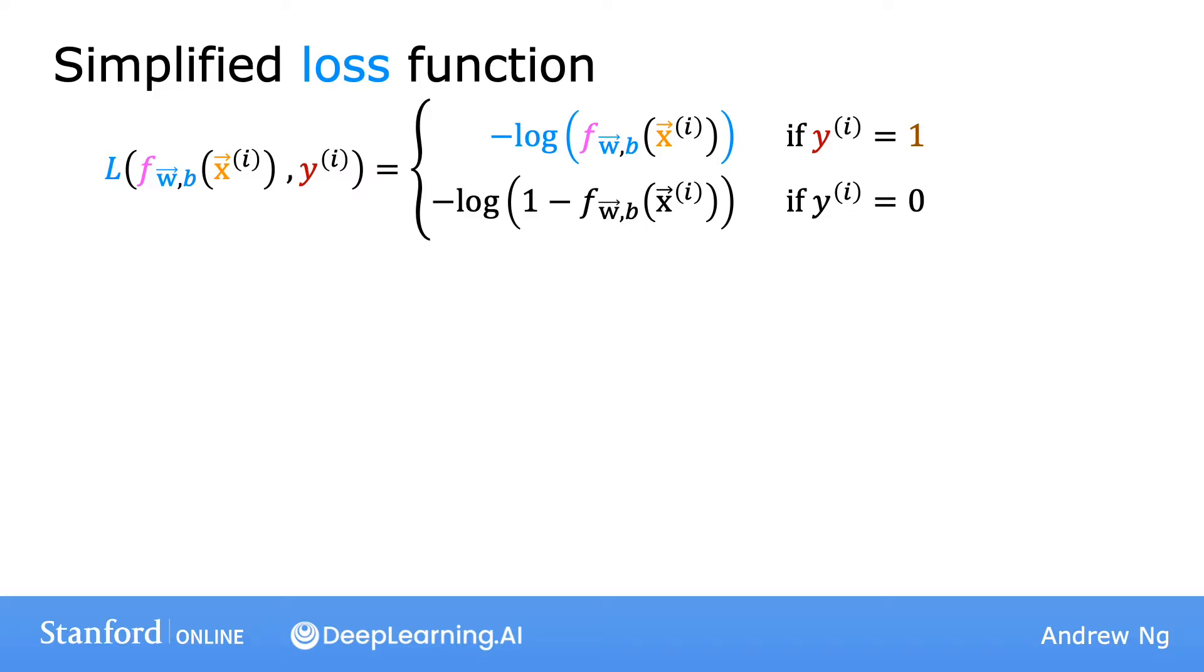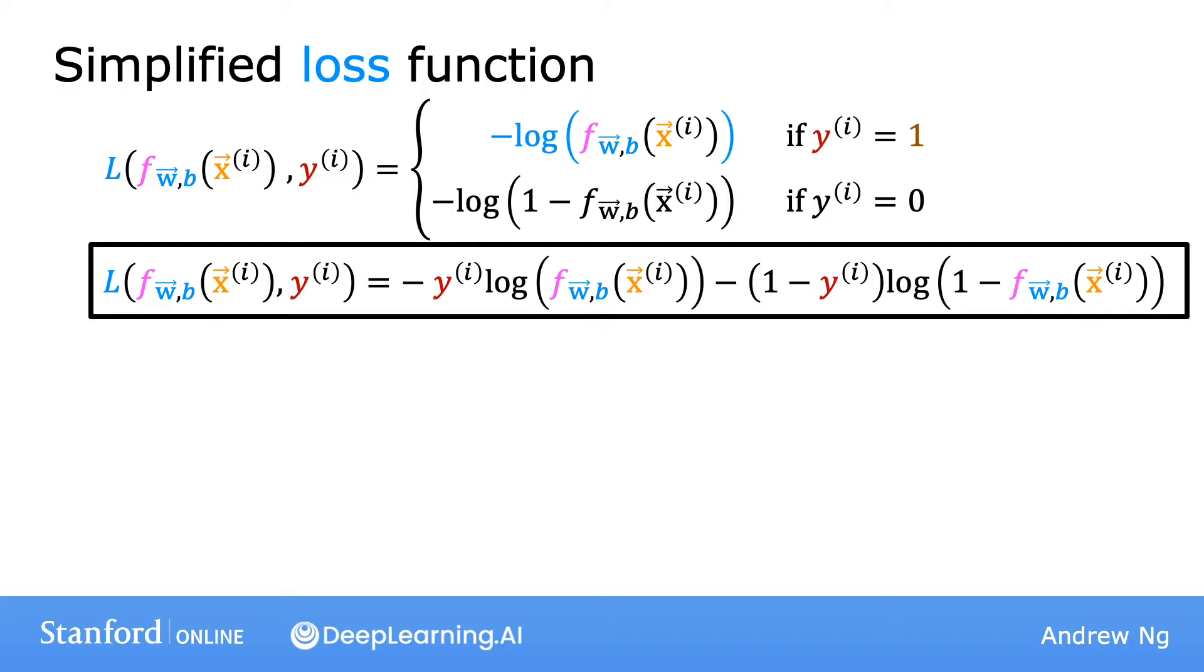You can write the loss function as follows. Given the prediction f of x and the target label y, the loss equals negative y times log of f minus 1 minus y times log of 1 minus f. And it turns out this equation, which we just wrote in one line, is completely equivalent to this more complex formula up here.